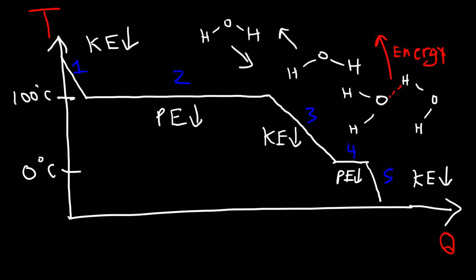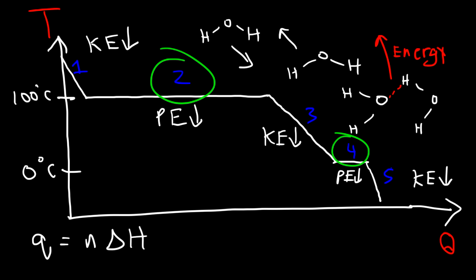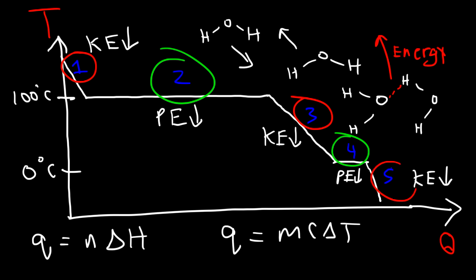So that's about it for this video. Q2 and Q4 are calculated using Q equals n times the enthalpy, and Q1, Q3, and Q5 are calculated using Q equals mc delta T. The cooling curve is simply the reverse of the heating curve. Thanks for watching and have a good day.